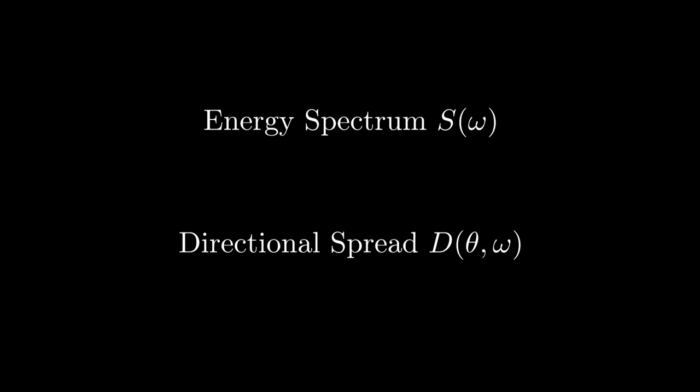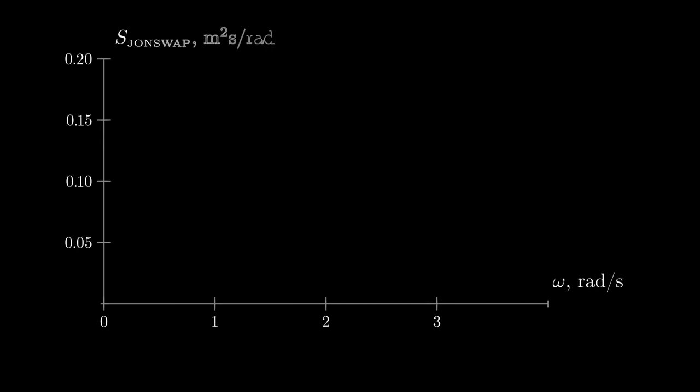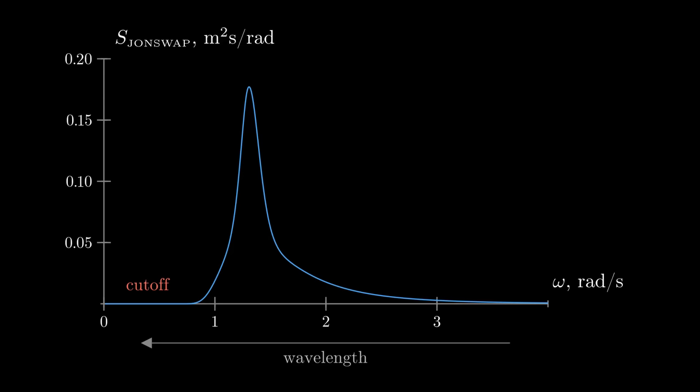Two important types of such laws are energy spectrum and directional spread. The energy spectrum describes how big are the waves with a certain frequency. It doesn't depend on the wave direction. There are several spectra created by oceanographers popular in computer graphics. They all have a cutoff in the low frequency zone. Because lower frequency means higher wavelength, at a given wind speed the distribution has a maximum possible wavelength.